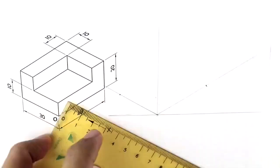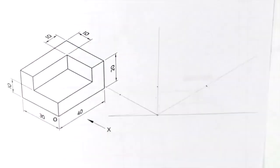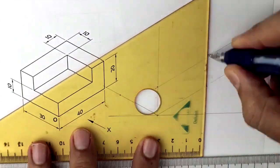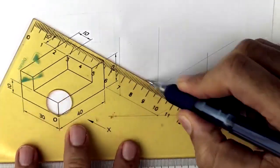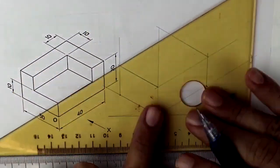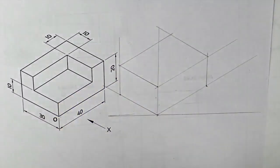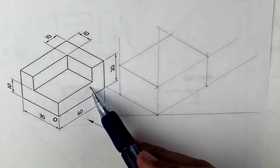So first we will mark that on our axis, isometric axis that is 30 degrees. We will draw it with the help of set square and T scale like this. After that I will draw this front portion which is 40 by 20 L shape.